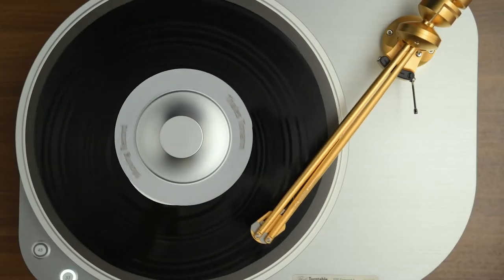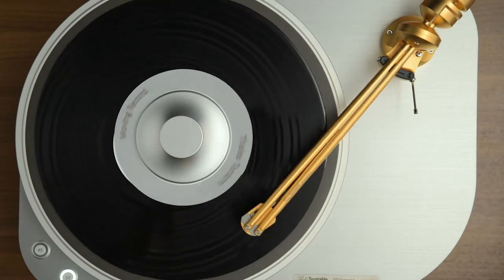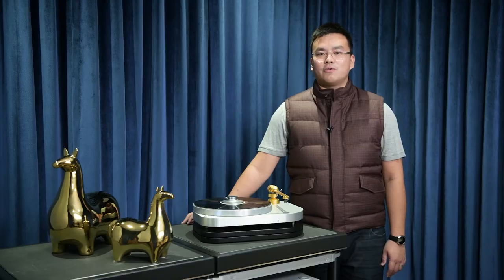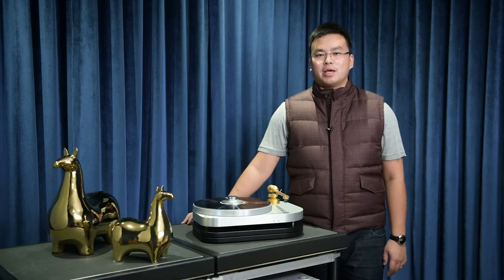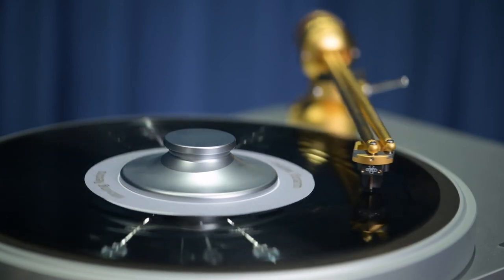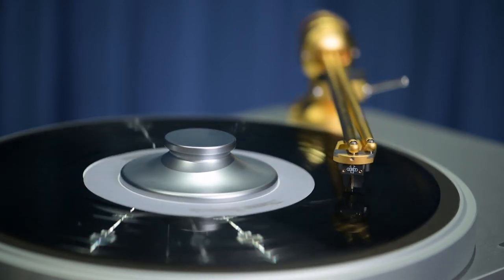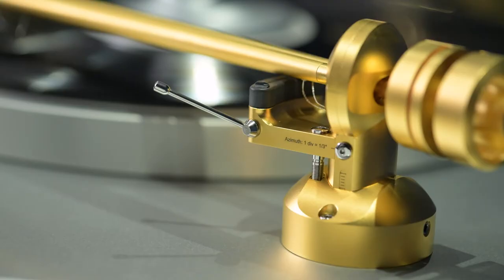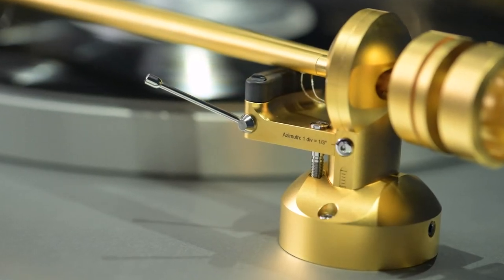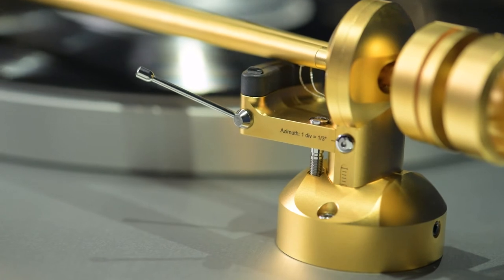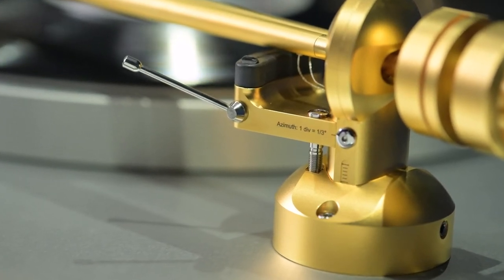Because the position of the headshell will change as the tonearm moves, this tonearm has two separate arm tubes made of a special aluminum to reduce the resonance. Then there are coatings of precious metals such as gold and rhodium. It's not just for aesthetic purposes, but the damping properties of the coating is also better, which gives you a warmer sound.